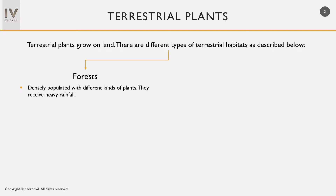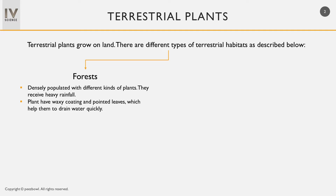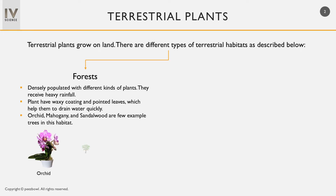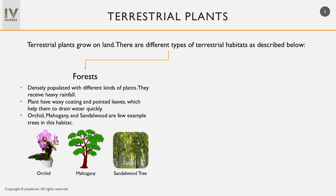The next terrestrial habitat is forests. Forests are densely populated with different kinds of plants and receive heavy rainfall. Plants in the forest area have waxy coating and pointed leaves, which help them to drain water quickly. Orchid, mahogany, and sandalwood are a few example trees in this habitat.